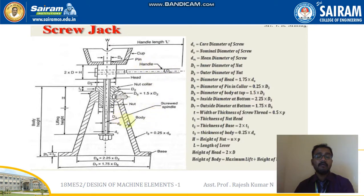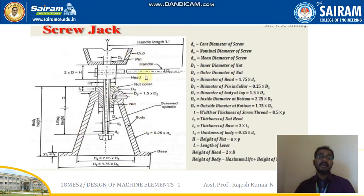We have many things to be designed; we'll see them one by one. The first one is the core diameter of the screw. Our major focus should be more on the screw design only, because the body design, cup design, or handle design are secondary designs. Even if you make small errors there, that will not directly affect the process. But if you make a mistake in the screw design — because this is the one which mainly does the actual work — we should be very careful.